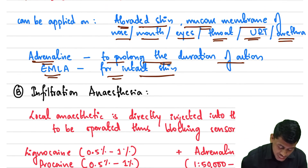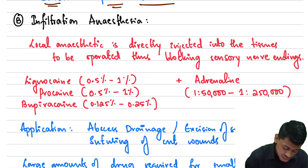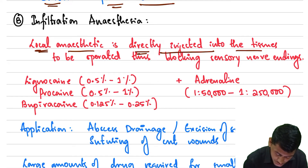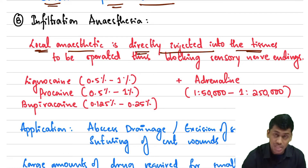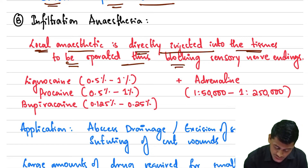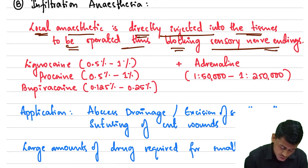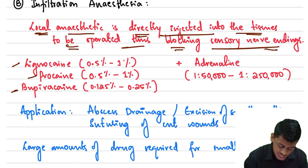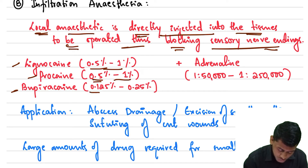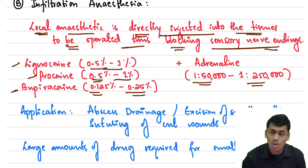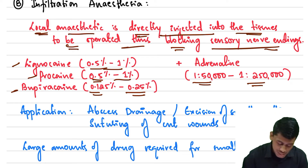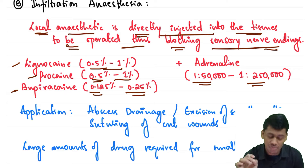Moving on to infiltration anesthesia — here the local anesthetic is directly injected into the tissues, blocking the sensory nerve endings of the given organ. We use lignocaine 0.5 to 1%, procaine 0.5 to 1%, and bupivacaine 0.125 to 0.25%. We can also combine adrenaline with them in a ratio of 1:50,000 up to 1:2,50,000.